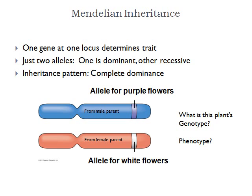Here's a figure to help you practice understanding complete dominance. We have two chromosomes — a homologous pair. One is from the male parent, who has given this individual an allele for purple flowers, while the female parent has given an allele for white flowers. This individual has the big P, little p genotype. What will be the phenotype? Purple — this individual is heterozygous and will produce purple flowers because big P completely dominates the little p allele.